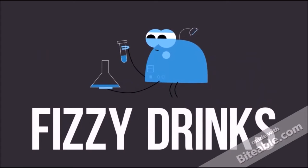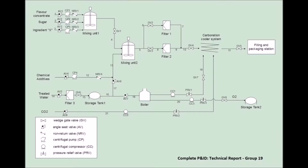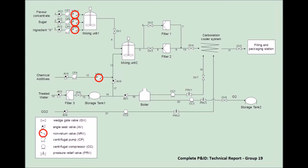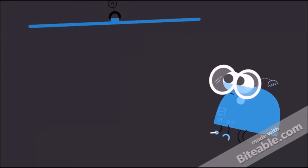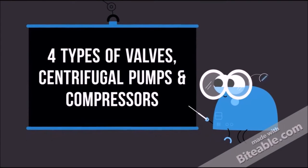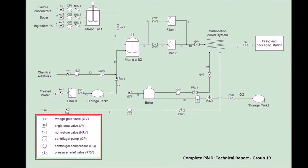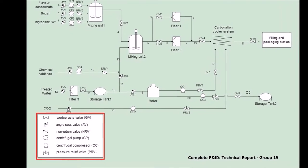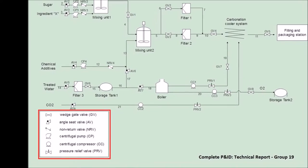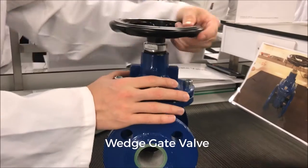In this specific PNID, which was designed to create fizzy drinks, we can identify the different types of valves: wedge gate valves, angle seat valves, non-return valves and pressure relief valves, as well as the centrifugal pumps and centrifugal compressors. In our PNID, four types of valves, a centrifugal pump and centrifugal compressor are utilized at proper positions. All units can be identified easily by looking at the symbols at the left corner of the PNID.